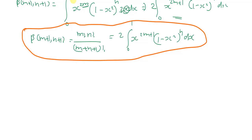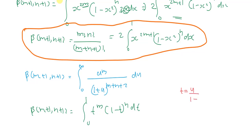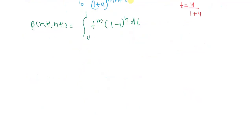Now let us consider another alternate form of the beta function. The relation is: beta(m+1, n+1) = integral from 0 to ∞ of u^m / (1+u)^(m+n+2) du. To prove this, we start from the form beta(m+1, n+1) = integral from 0 to 1 of t^m (1−t)^n dt, and apply the substitution t = u/(1+u).